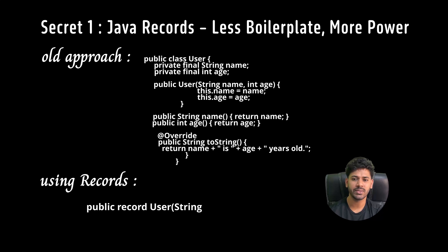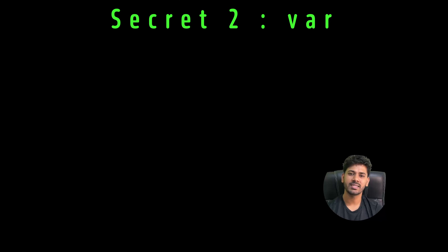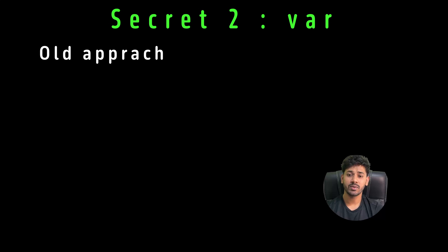With Records we don't need to do all this. We can just write: record User(String name, int age) — that's it. Clean, immutable, and concise. Perfect for DTOs and data classes.